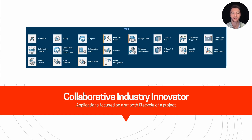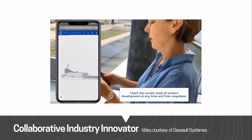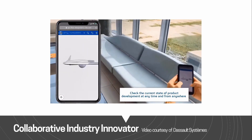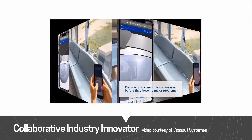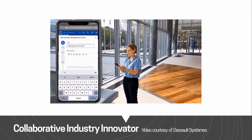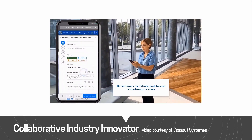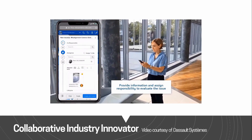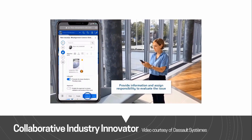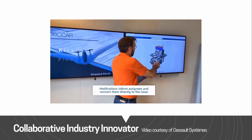So next up we'll take a quick look at the role in action. Here we can see the Collaborative Industry Innovator role in action. Just as with the Collaborative Business Innovator, this has the ability to view your 3D models directly from your device. However, you can now assign issues that you find and assign someone to address those issues.